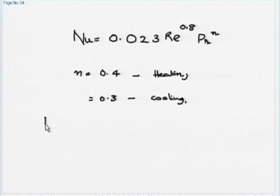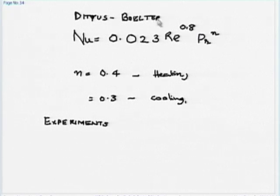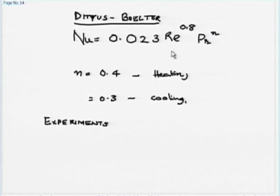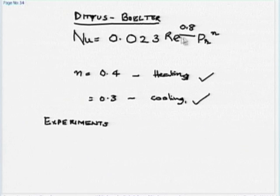This equation came entirely from experiments — published around 1950 and still works. He collected hundreds of experimental data and fit an empirical correlation of the form Nu = C Re^m Pr^n. The exponent 0.3 or 0.4 on Prandtl number essentially accounts for property variations. Re^0.8 is an empirical result — whenever you do turbulent flow, check whether you get Re^0.8.